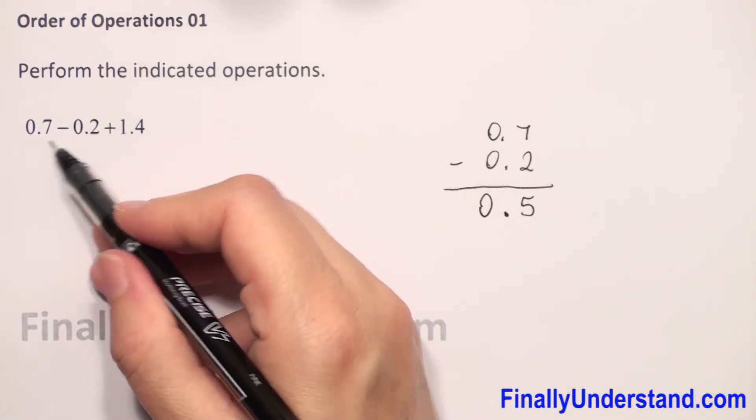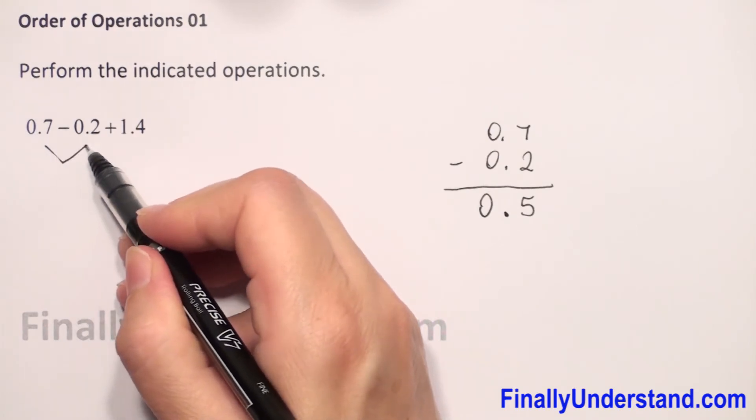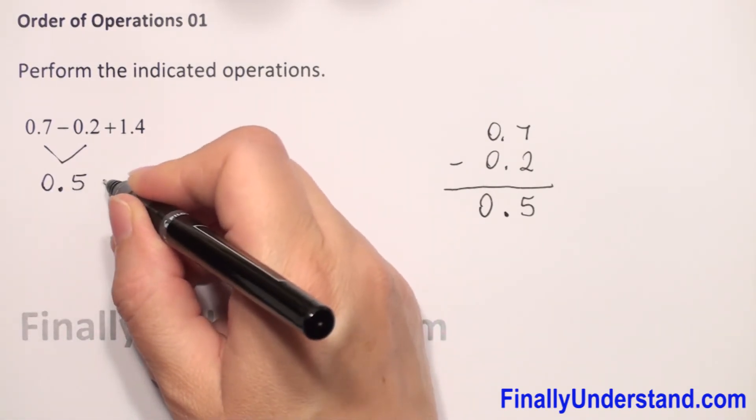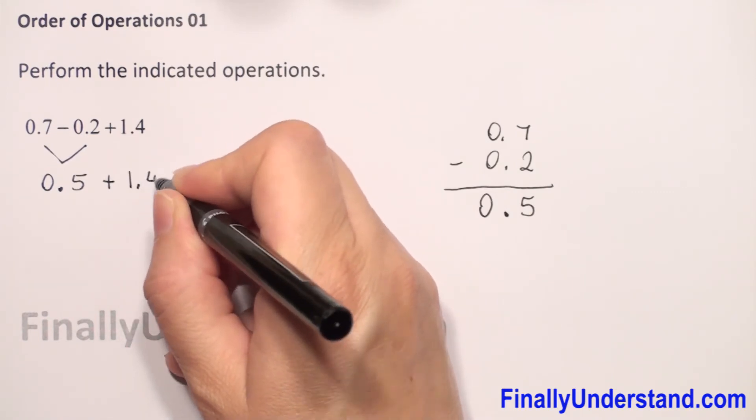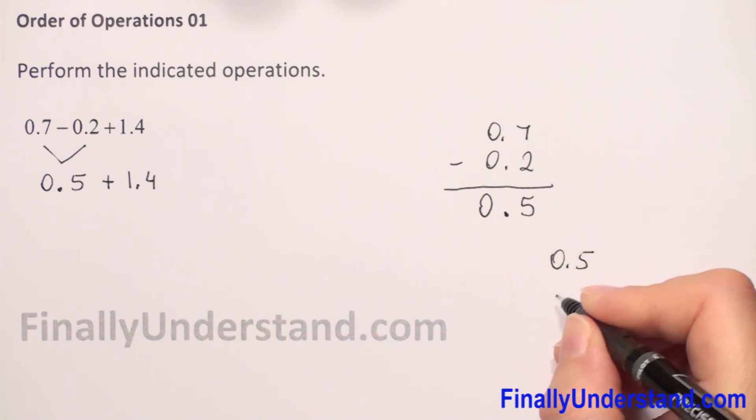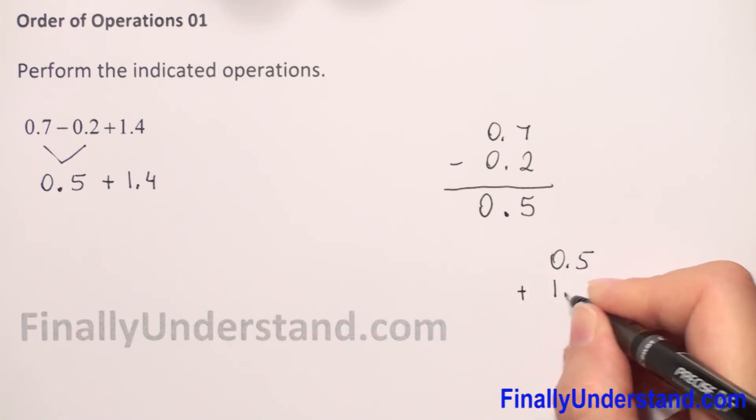From the subtraction we got 0.5, and we have to add 1.4. So let me write this: we have 0.5 plus 1.4.